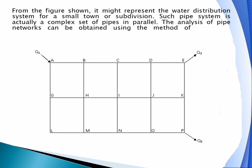The analysis of pipe networks can be obtained using the method of successive approximations or the Hardy-Cross method. The following slides present the procedures in the analysis of a pipe network system using the Hardy-Cross method.